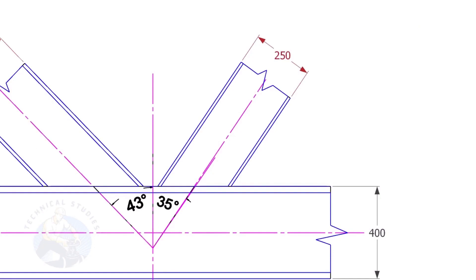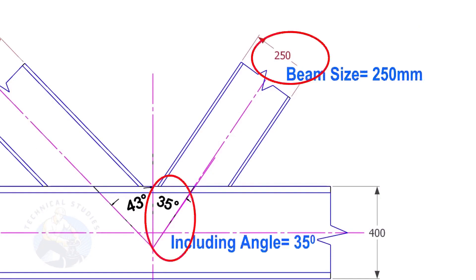Here, the size of the beam is 250 and the including angle is 35. Let us calculate the cutback.